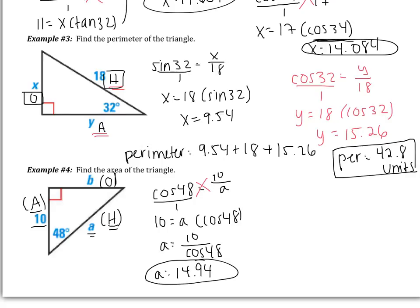Now I found A. It is your responsibility to set up a ratio to find B and then to use that to find the area of the triangle. Good luck. Okay, let's see how we did. Now, in order to find B, that's the opposite side. The other side I was given is 10, which is the adjacent side.